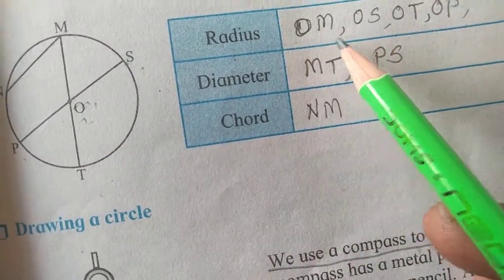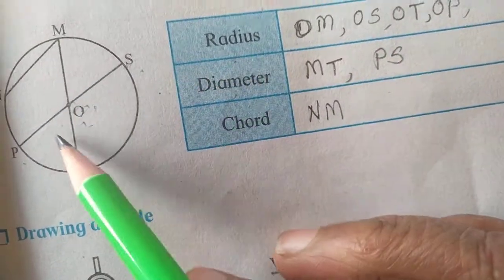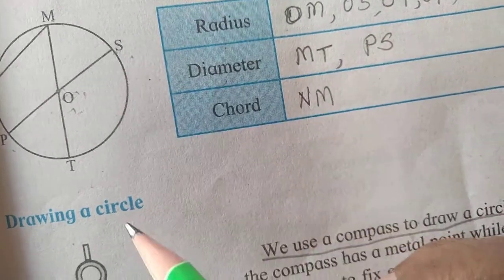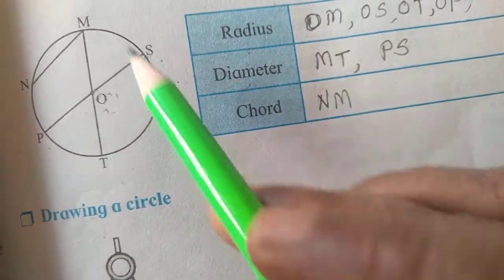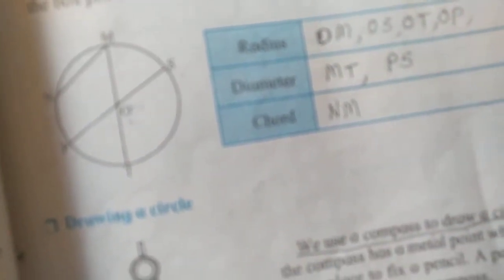Now, diameter. Diameter means passing through the center of the circle. Diameter is MT and PS. MT and PS is the diameter.